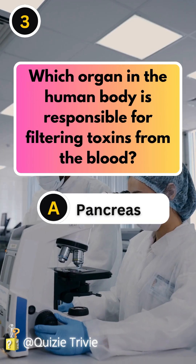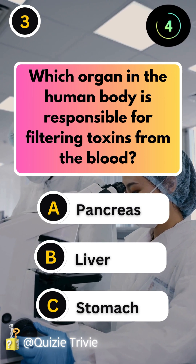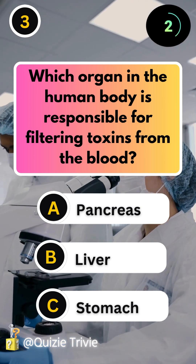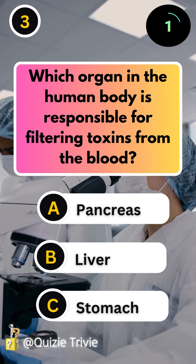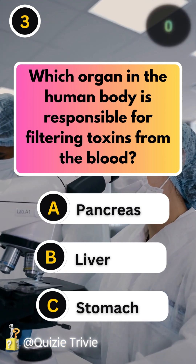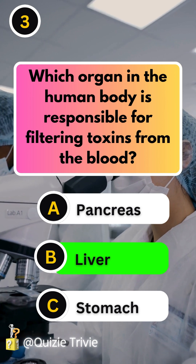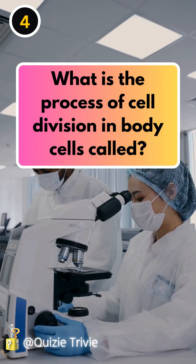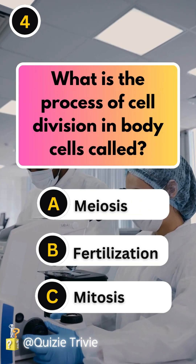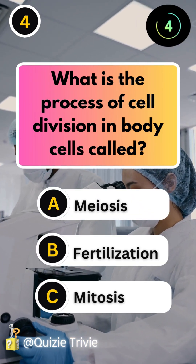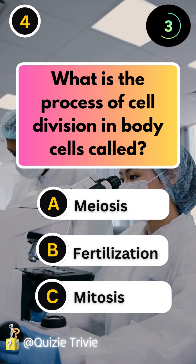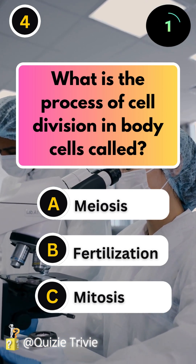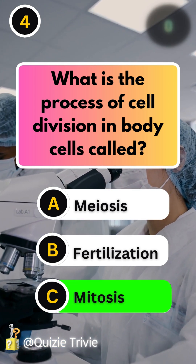Which organ in the human body is responsible for filtering toxins from the blood? Liver. What is the process of cell division in body cells called? Mitosis.